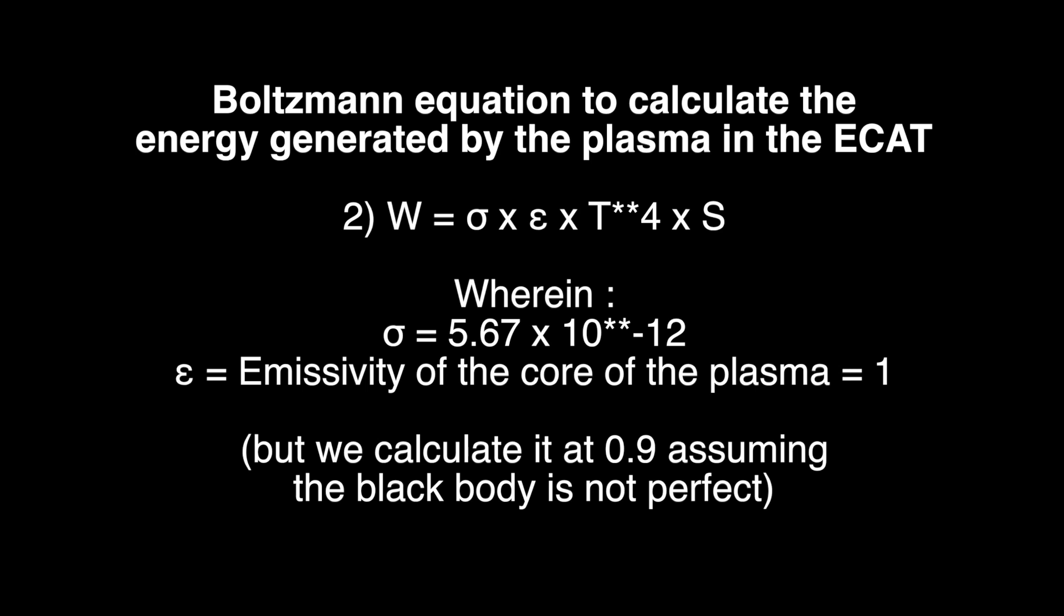Sigma is 5.67 times 10 to the minus twelfth power. It would be 10 to the minus eighth if we were calculating square meters, but since we are calculating square centimeters, it is 10 to the minus twelfth.